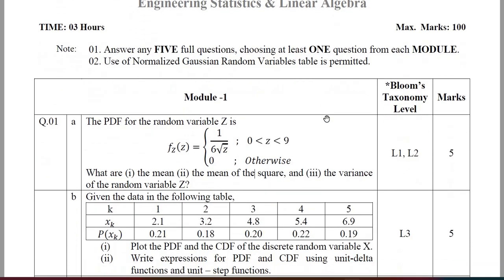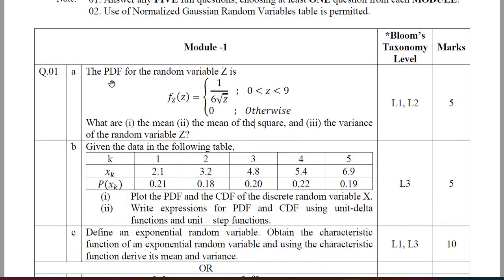In Module 1, question number 1 asks about the PDF (probability density function) for the random variable Z for a given continuous function. You are required to find the mean (Z-bar), the mean of the square, and the variance (sigma square) of the random variable Z.